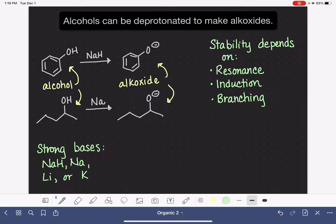We know that the more branching a molecule has, the less stable it's going to be. So branching, the less you have, the more stable the alkoxide will be.